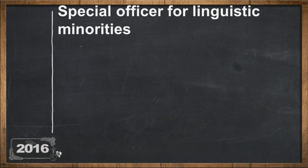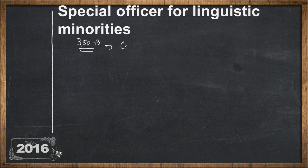Regarding the organization: in pursuance of Article 350B, the Office of the Special Officer for Linguistic Minorities was created in 1953. The officer is designated and known as the Commissioner of Linguistic Minorities.